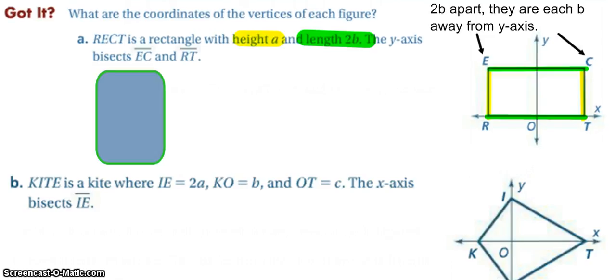So if we're trying to find the coordinates of rectangle RECT and we know it has a height of A and a length of 2B. I know the length from R to T and from E to C is 2B, so half of that in the middle would just be B. So I know they are both B away from our zero point on the Y axis.